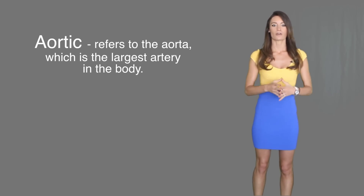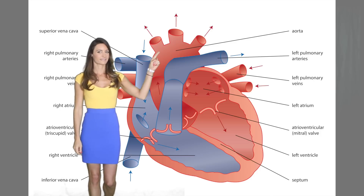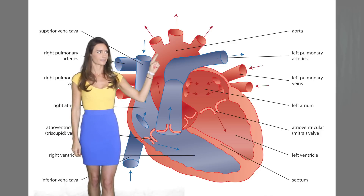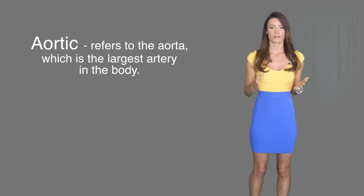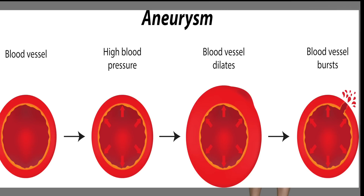First we must understand what aortic aneurysm means, so let's break down the word. The first part, aortic, refers to the aorta, which is the largest artery in the body. The next part, aneurysm, describes a disease process where there is an abnormal widening or stretching of a portion of the artery. This is due to weakening of the blood vessels.